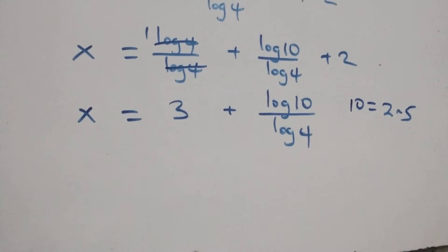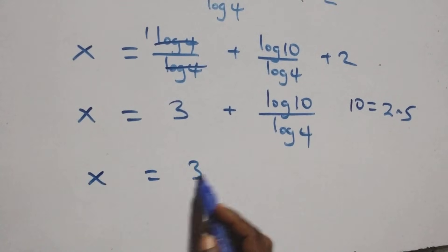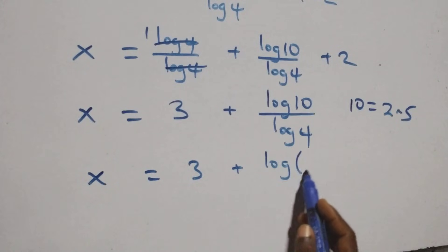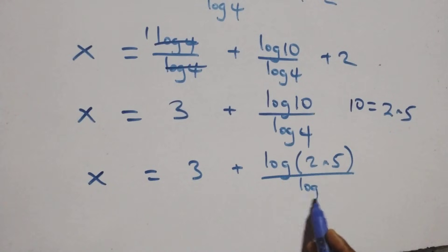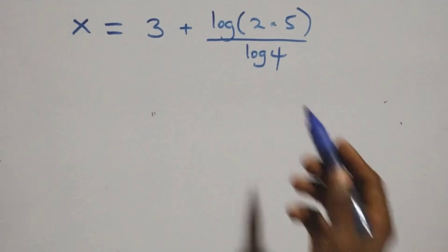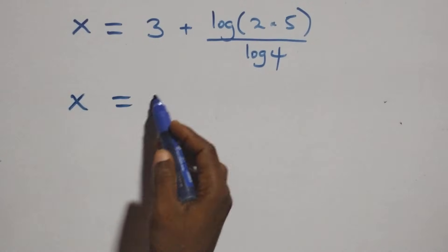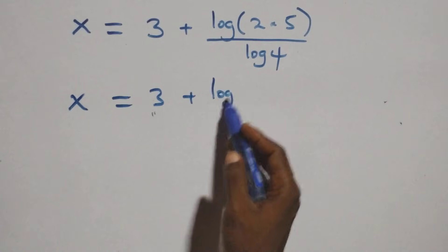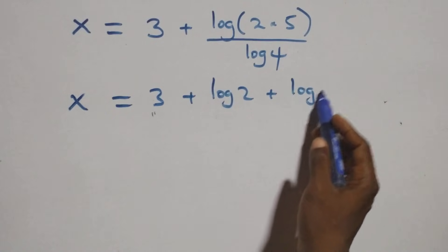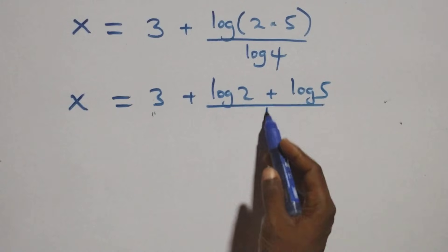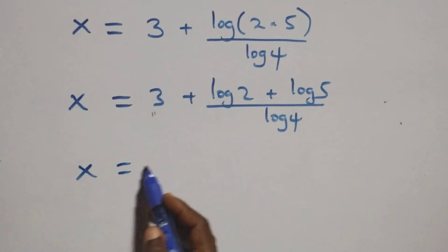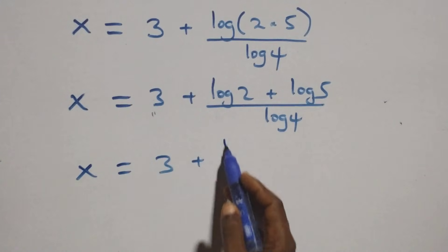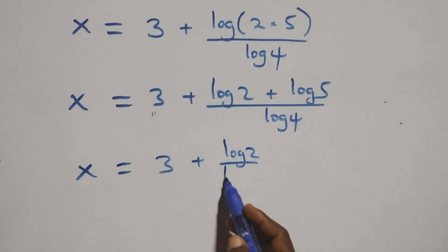What we have becomes x equals 3 plus log(2 times 5) over log 4. Applying the law of logarithms again, x equals 3 plus log 2 plus log 5 over log 4. We separate this into two fractions: x equals 3 plus log 2 over log 4 plus log 5 over log 4.